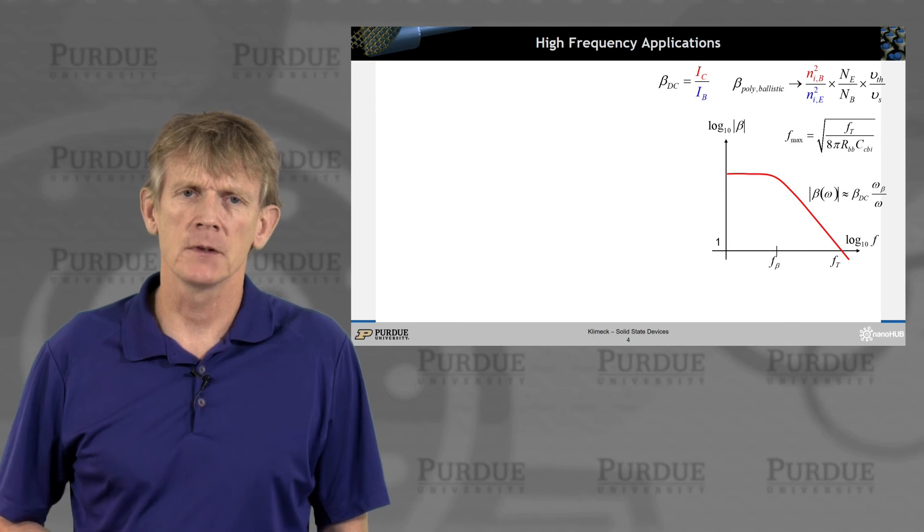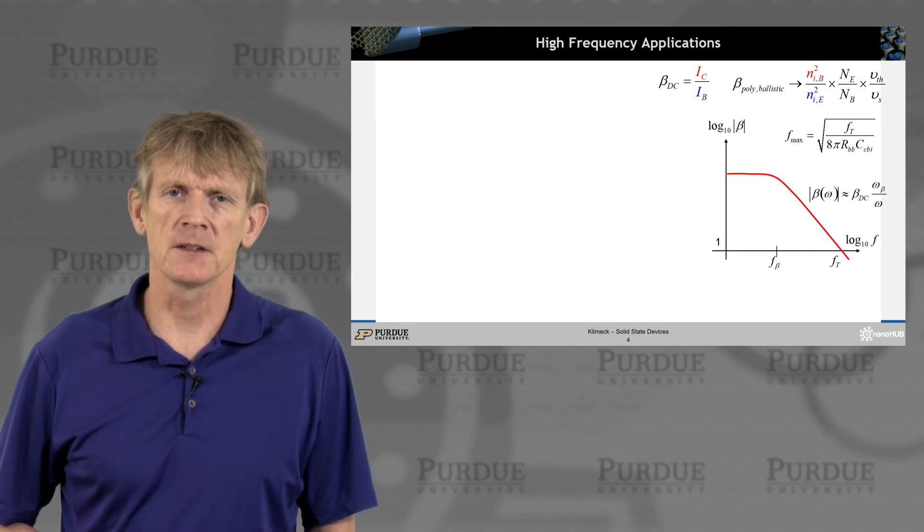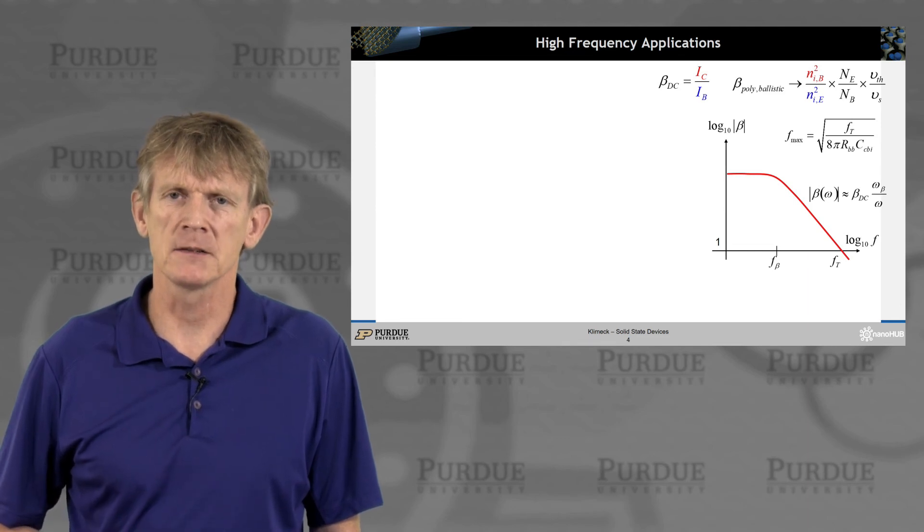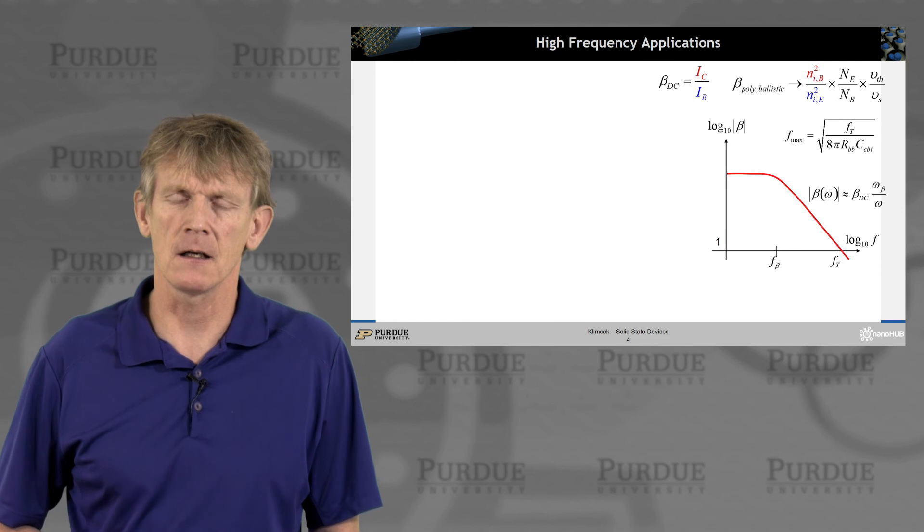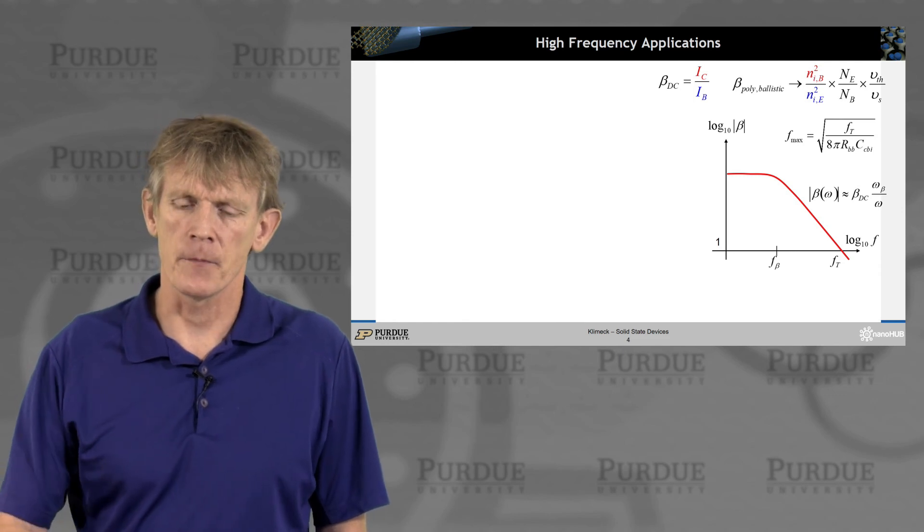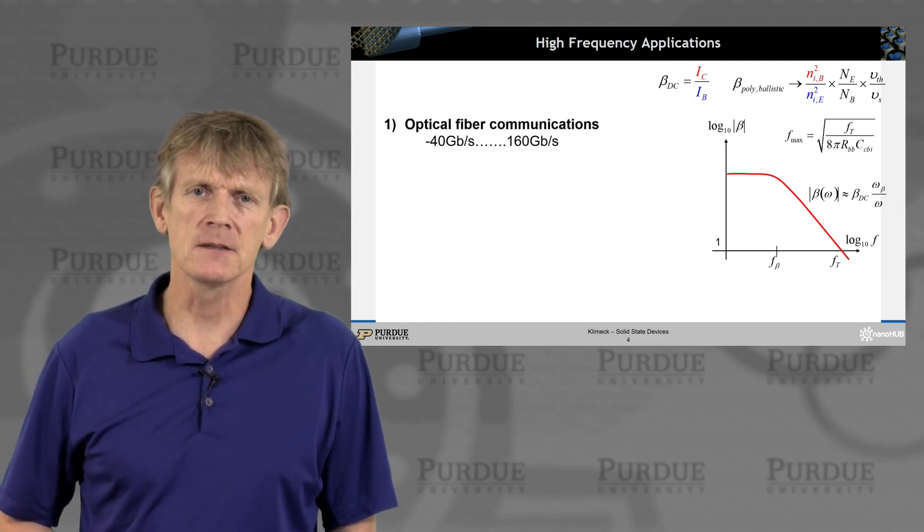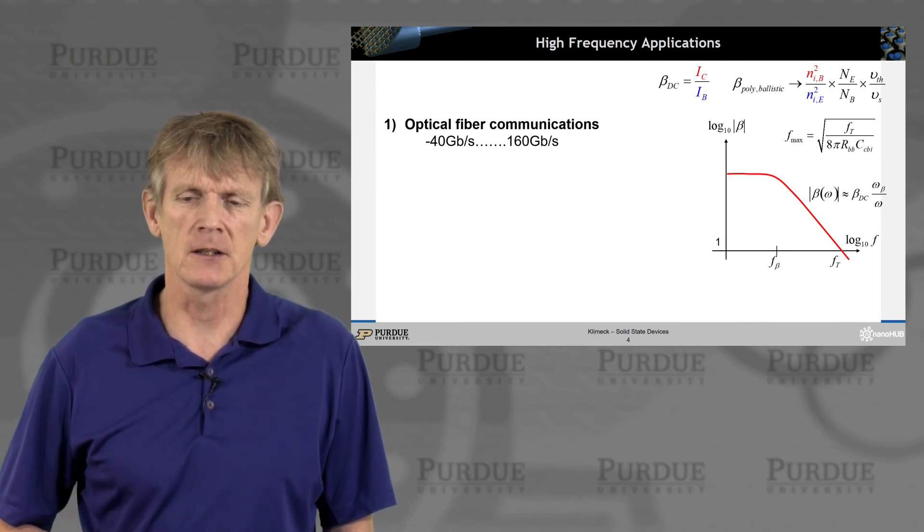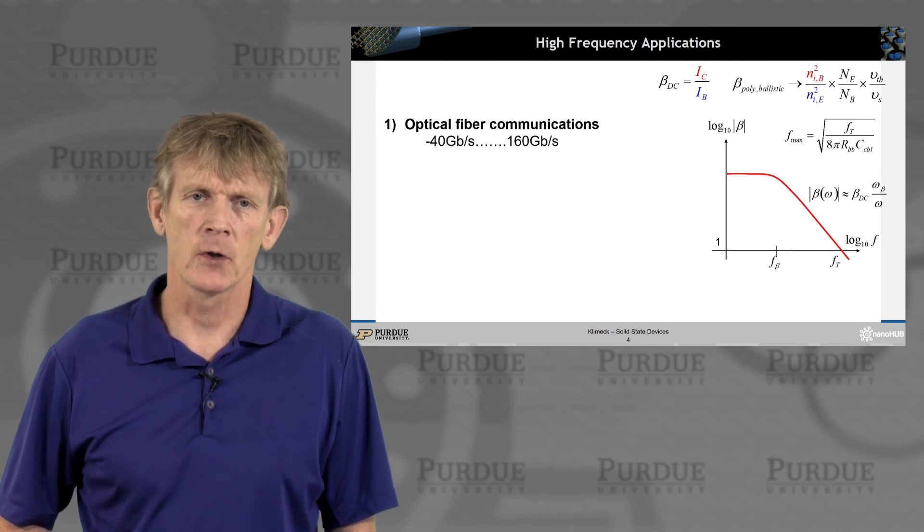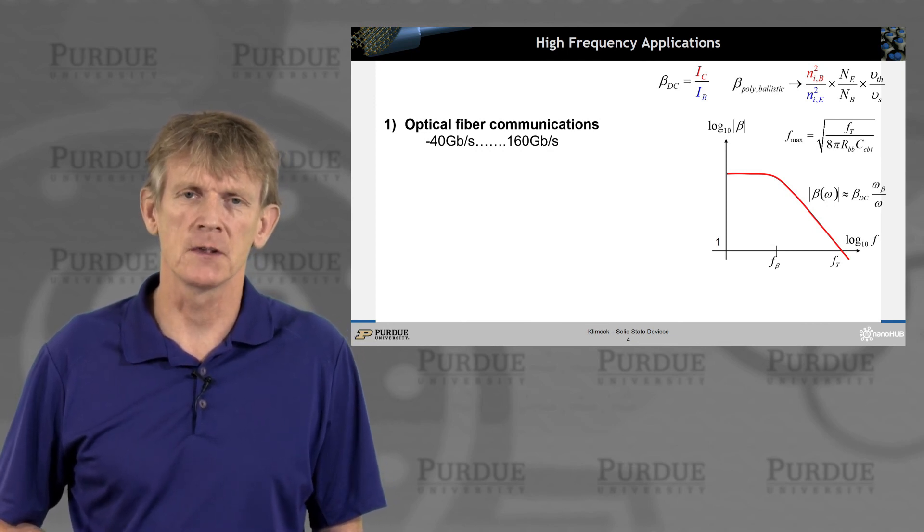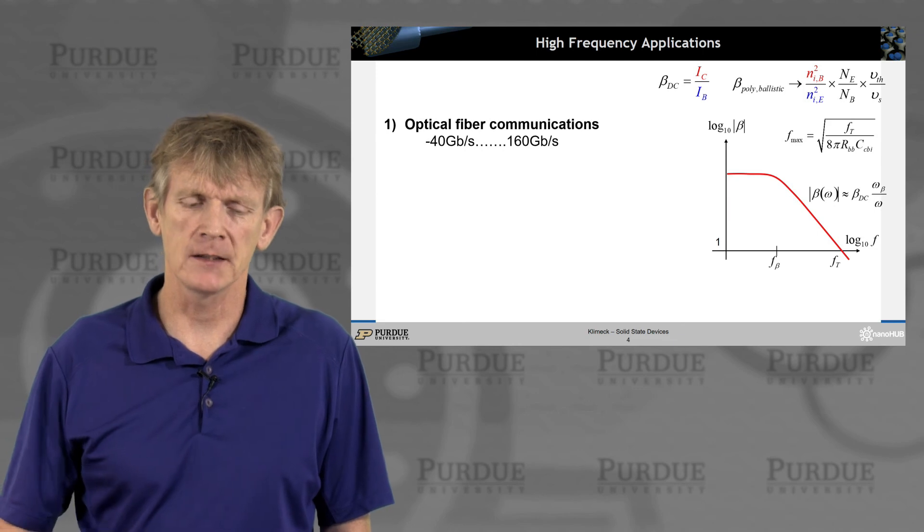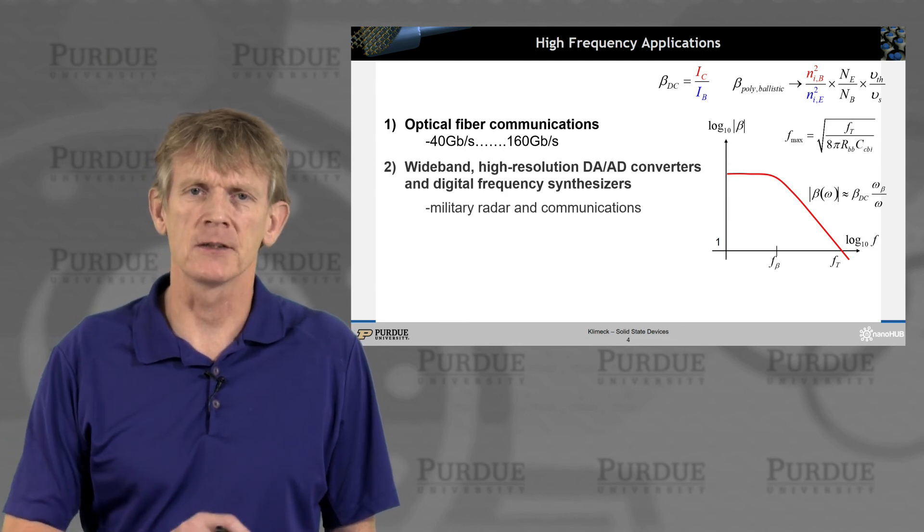All right, we talked about the bipolar junction transistor and its applications to high frequencies. We derived a bunch of equations where we looked at gain and we looked at frequency cutoff. And why are we doing this? Well, you need these devices for optical fiber communication. So in all your cellular networks where you have optical fibers, you have devices that run at pretty high speeds, and they need to amplify.